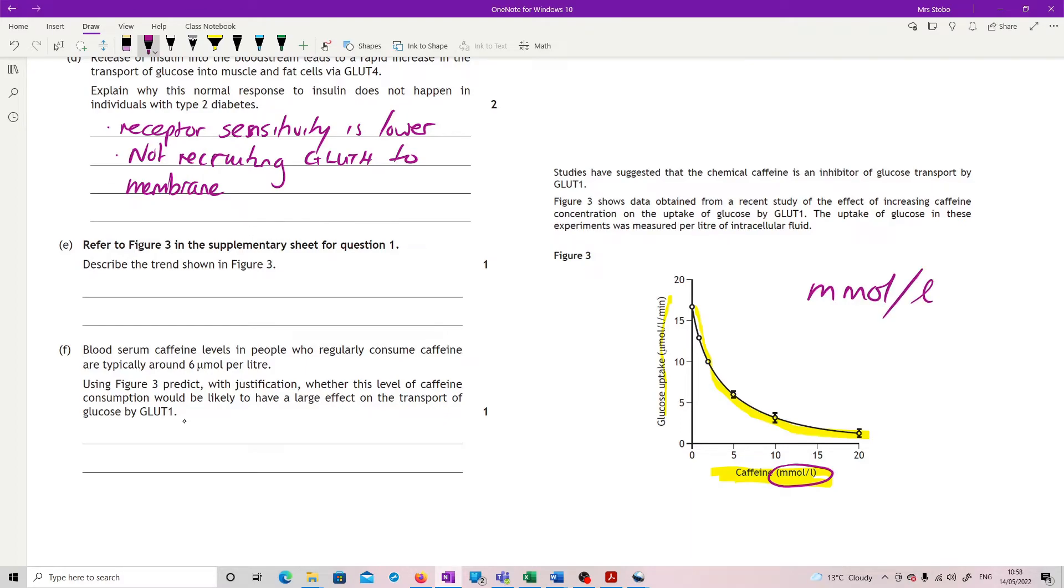So that is one thousand times less concentrated. So we are not looking on the graph here at six, which has a drastic impact on glucose uptake, but we're looking at 0.006.